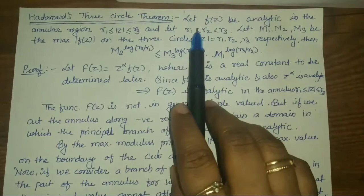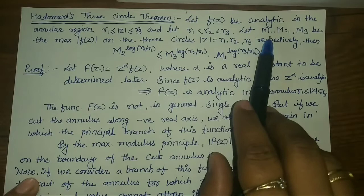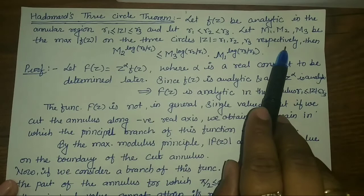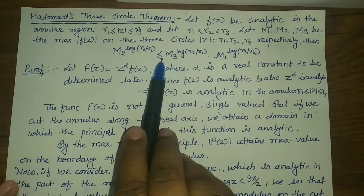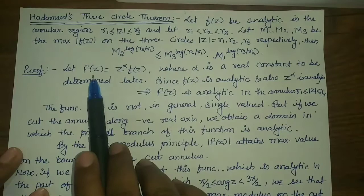In today's lecture we will see Hadamard's Three Circle Theorem. The statement of the theorem is: let f(z) be analytic in the annular region where mod z lies between R1 and R3, and suppose R2 lies between R1 and R3. Let M1, M2, M3 be the maxima of mod f(z) on the three circles mod z equals R1, R2, R3 respectively. Then we have to show that M2 to the power log(R3/R1) is less than or equal to M3 to the power log(R2/R1) into M1 to the power log(R3/R2).